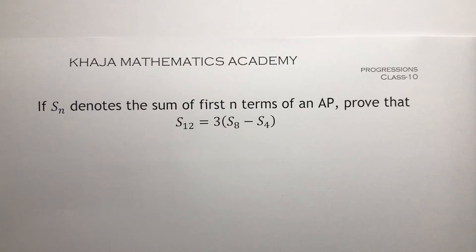If Sn denotes the sum of first n terms of an AP, prove that S12 equals 3 times S8 minus S4.